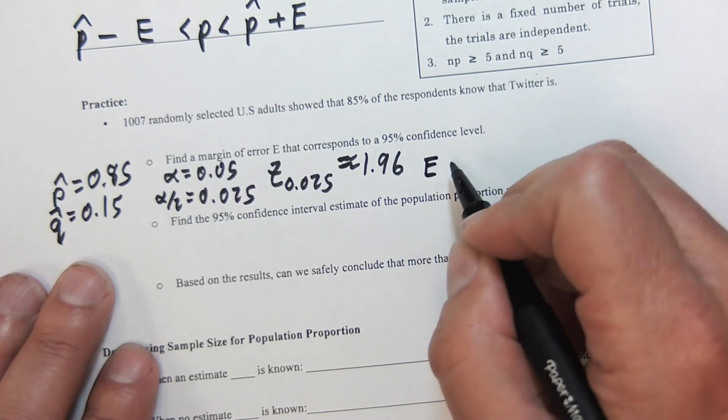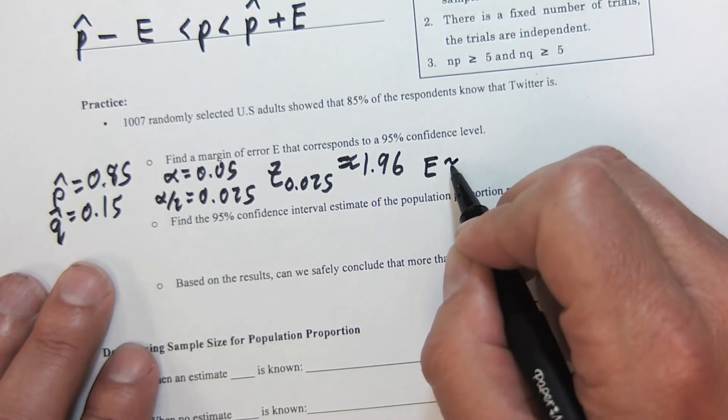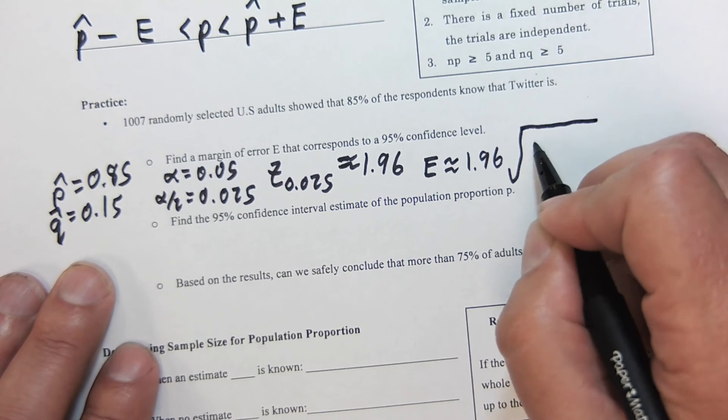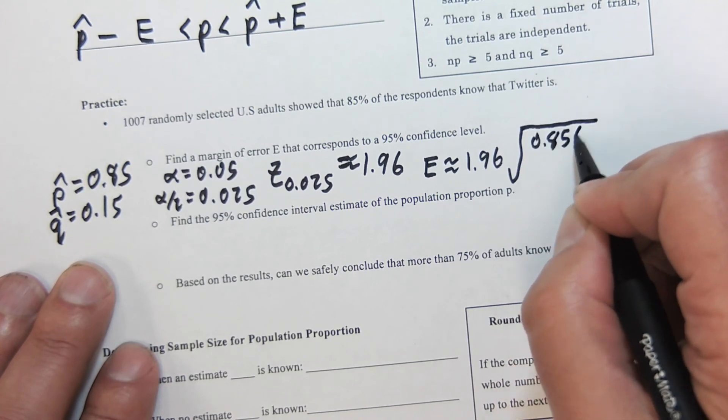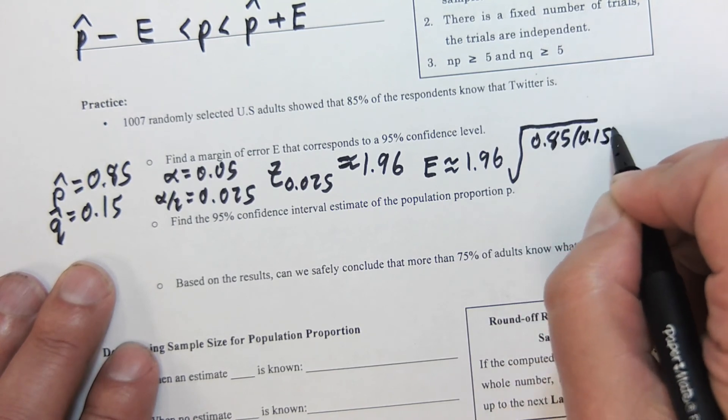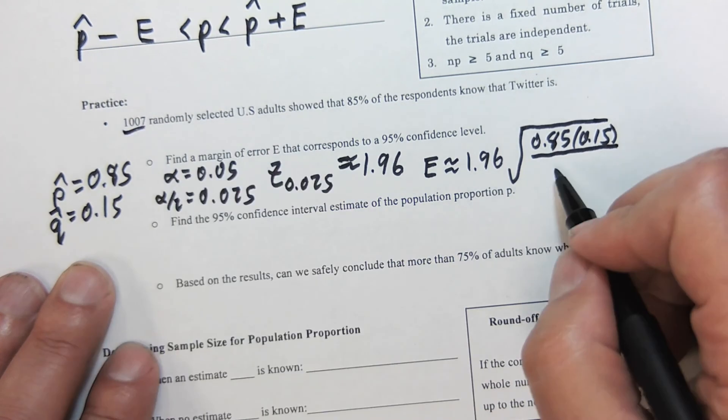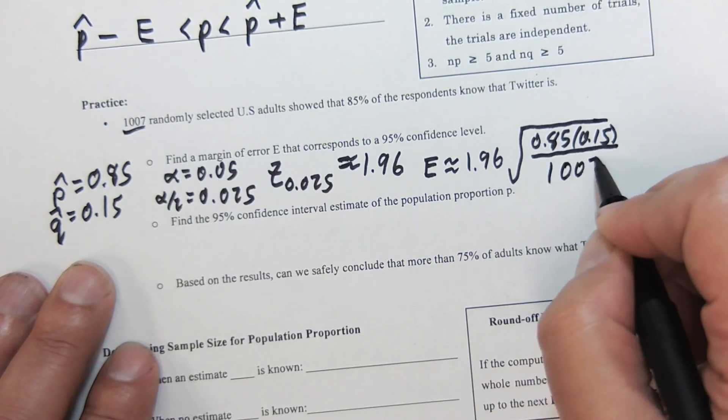This means that our error is about 1.96 times the square root of 0.85 times 0.15 over N, which was 1007.